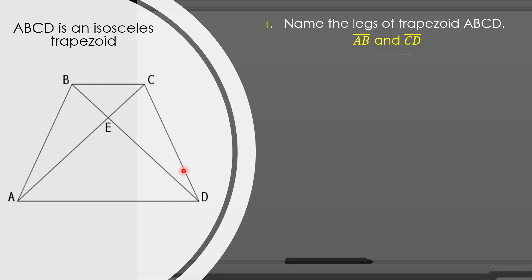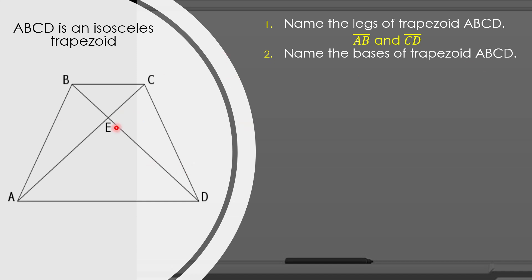This time, let us name the bases of trapezoid ABCD. The bases of this isosceles trapezoid are side BC and side AD.